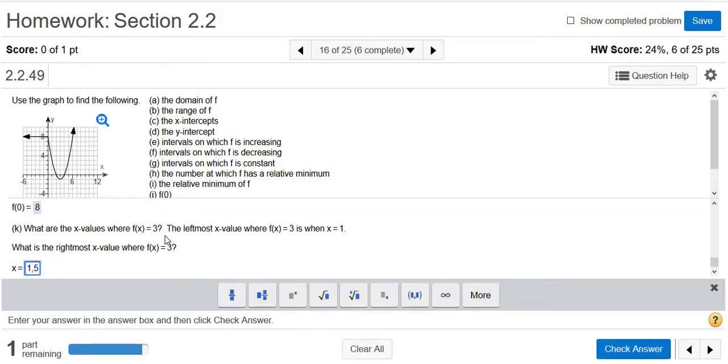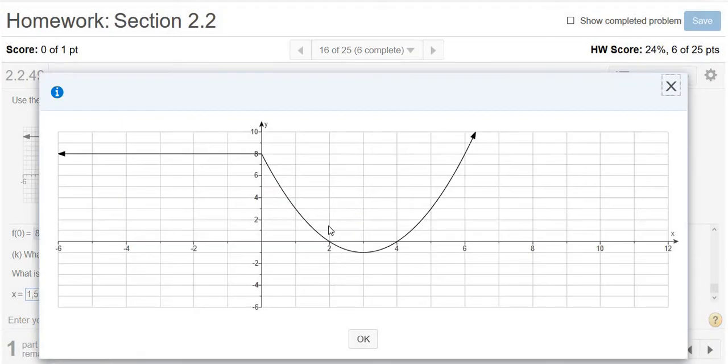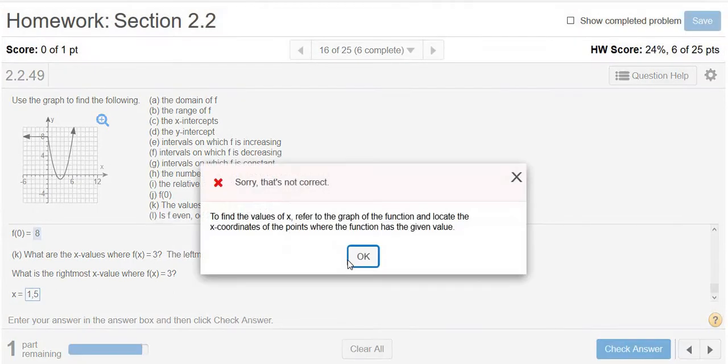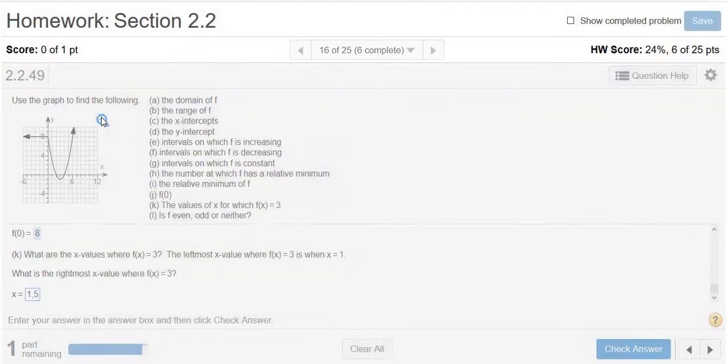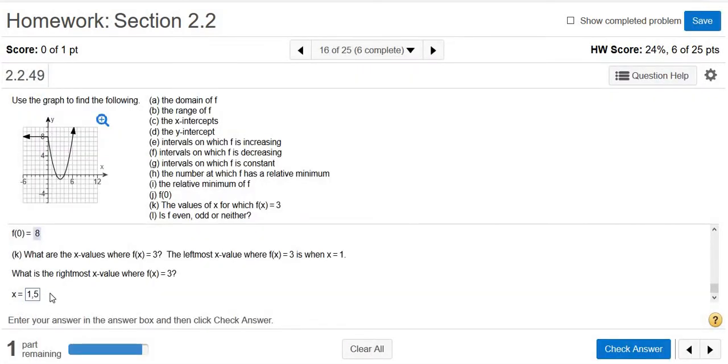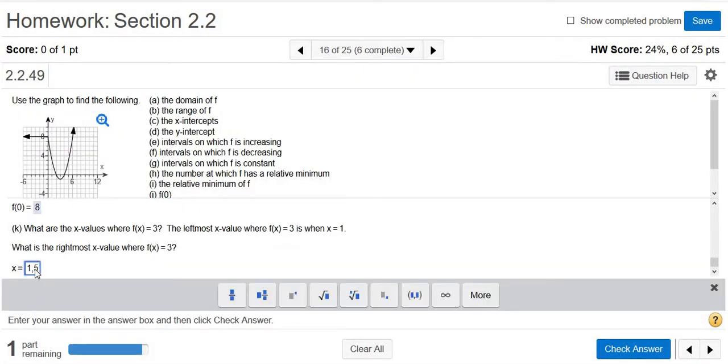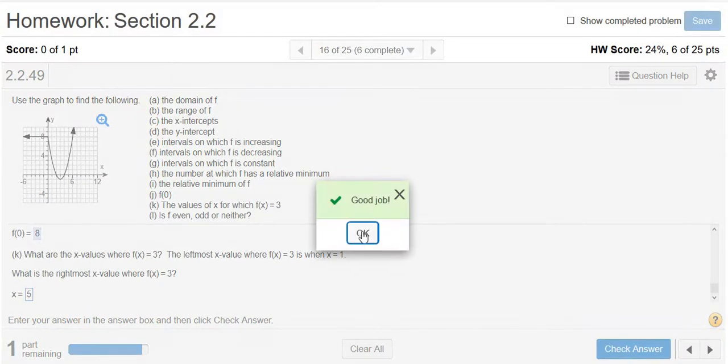You might say, why am I saying y? Because f of x is equal to y. It's basically asking us when is the y-value equal to 3—when x is 1 and when x is 5. Oh, I got it wrong. Let me see what I did wrong. I see what I did. It wants the rightmost x-value. I didn't read the question. Well, we have more than one try. The rightmost x-value is 5.